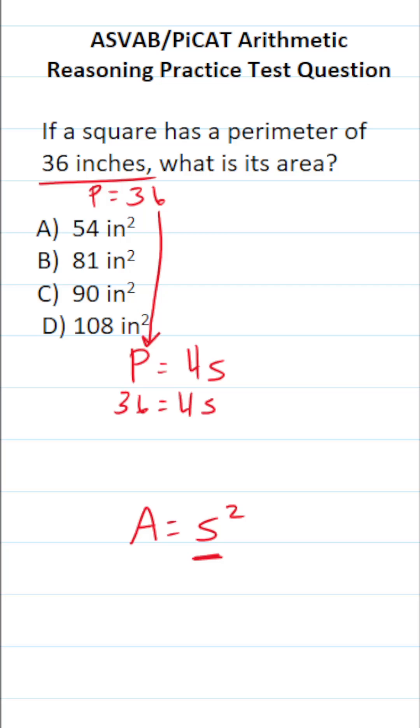So to solve for S in the perimeter formula, all we have to do is divide both sides by 4. In doing so, this crosses out, leaving us with S on this side. 36 divided by 4 is 9, so we know S equals 9.